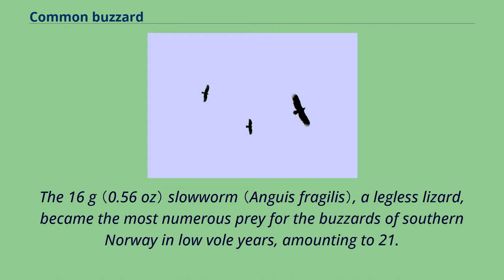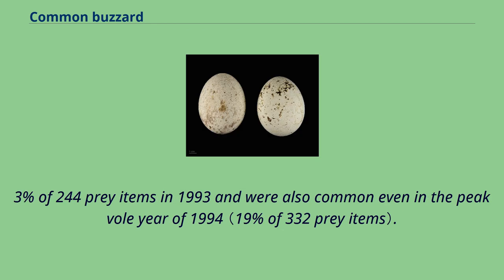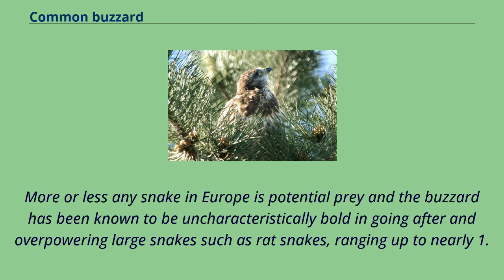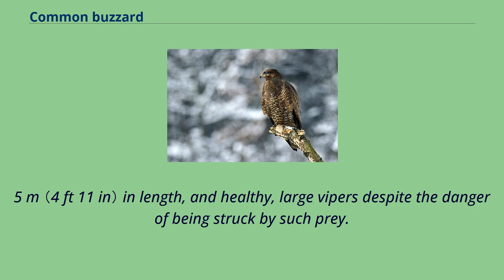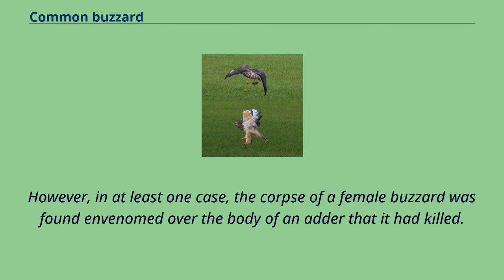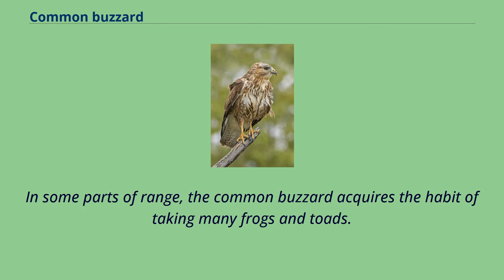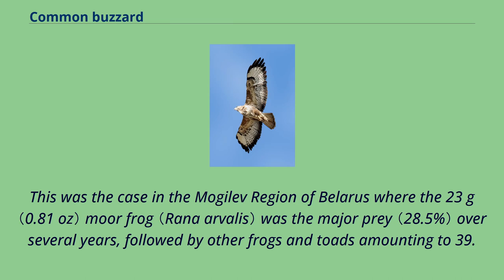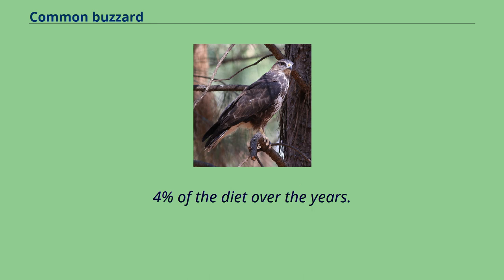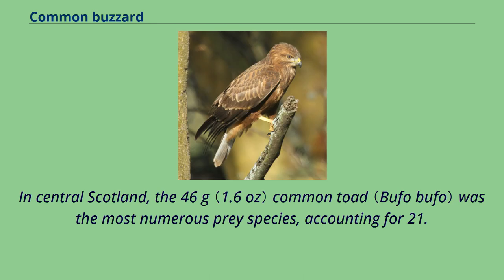In some parts of its range, the common buzzard acquires the habit of taking many frogs and toads. This was the case in the Mogilev region of Belarus, where the 23-gram marsh frog was the major prey over several years, followed by other frogs and toads amounting to 39.4% of the diet. In central Scotland, the 46-gram common toad was the most numerous prey species, accounting for 21.7% of 263 prey items, while the common frog made up a further 14.7% of the diet. Frogs made up about 10% of the diet in central Poland as well.